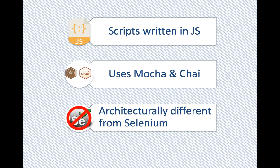Cypress is architecturally different from Selenium. Selenium executes remote commands through the network, whereas Cypress runs in the same run loop as your application. This allows Cypress to be so close to the web application under test that we can do things that can't be done in Selenium, such as stubbing DOM APIs.